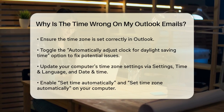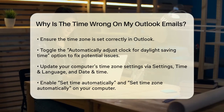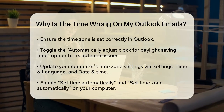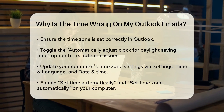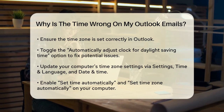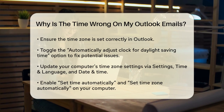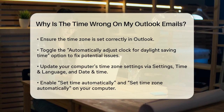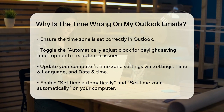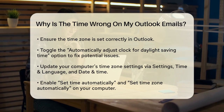Another step is to update your system time zone settings. On your computer, go to Settings, then Time and Language, and finally Date and Time. Make sure the time zone is correct and that the Set Time Automatically and Set Time Zone Automatically options are enabled. This ensures that your system and Outlook are in sync.